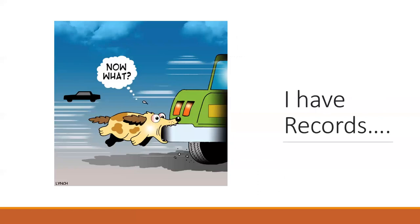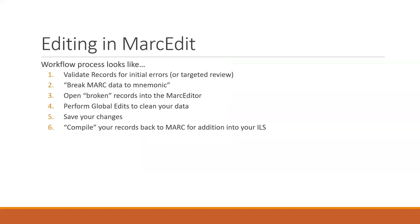I was asked a number of times this week: I've been given records, now what do I do? So I thought a good place to start would be for folks who maybe have never had to install MarcEdit or are using it for the first time: what do I do now that I've downloaded a set of records? Essentially in MarcEdit, the workflow process looks something like this if you're editing it. So you can validate records looking for initial errors — you don't have to do that specifically, MarcEdit will do that on the fly.